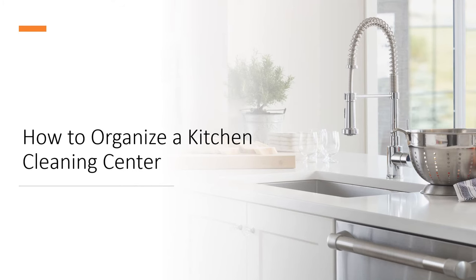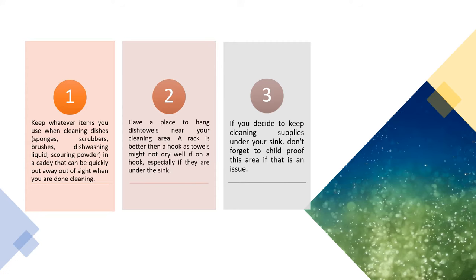How to organize a kitchen cleaning center. Number one, keep whatever items you use when cleaning dishes — sponges, scrubbers, brushes, dishwashing liquid, scouring powder — in a caddy that can be quickly put away out of sight when you are done cleaning. Have a place for dish towels near your cleaning area. A rack is better than a hook as towels might not dry well if on a hook, especially if they are under the sink. If you decide to keep cleaning supplies under your sink, don't forget to child-proof this area if that is an issue.